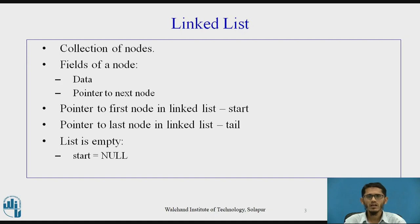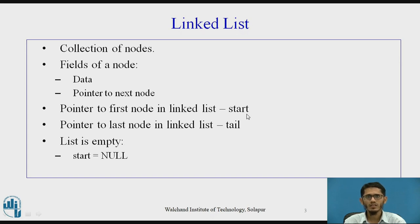A linked list is a collection of nodes. A node has two types of fields: one field is a data field that stores the data, and the second field is a pointer to the next node in the linked list. We have two different pointers: the pointer to the first node is called the start, and the pointer to the last node is called the tail. The tail pointer is optional, but the start pointer is compulsory. When the list is initially empty, the start pointer points to null.